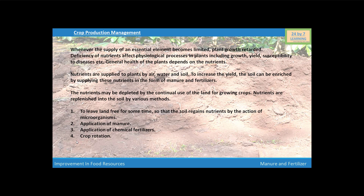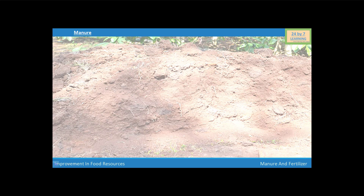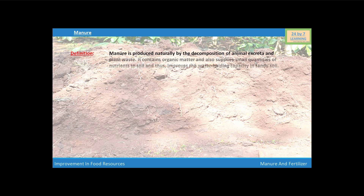The next method is by crop rotation. Now we are going to discuss about manure. Manure is produced naturally by the decomposition of animal excreta and plant waste. It contains organic matter and also supplies small quantities of nutrients to soil, thus improving the water holding capacity in sandy soil. Manure is a substance rich in organic matter but possesses small quantities of nutrients.